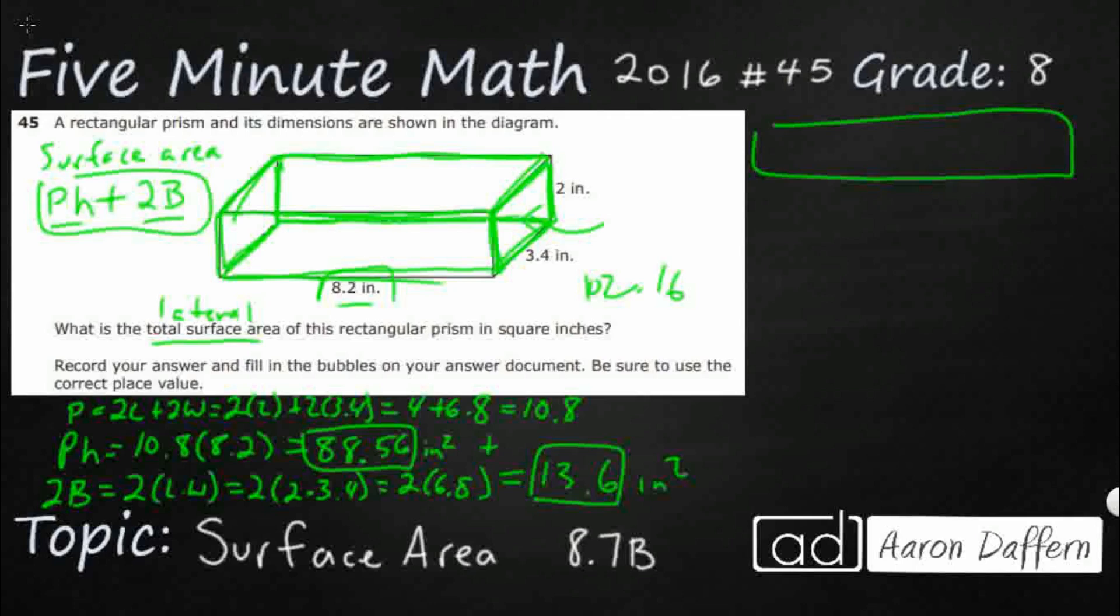Obviously we need to bubble it in. Let's make sure we get that correct here. You've got your 16 right here, and you've got 102 over here. You don't need that last spot. So there's your answer.